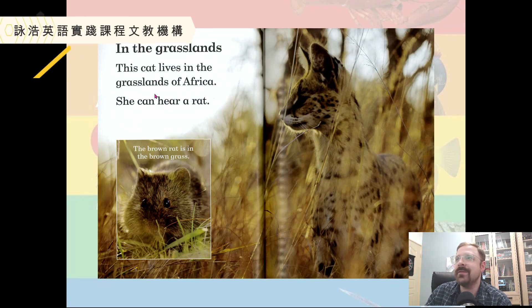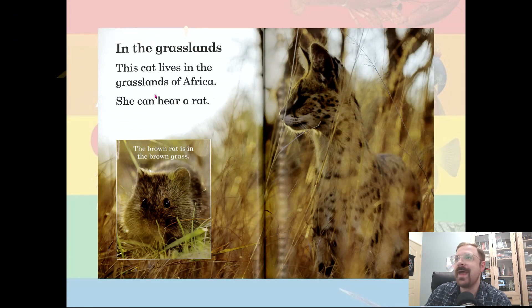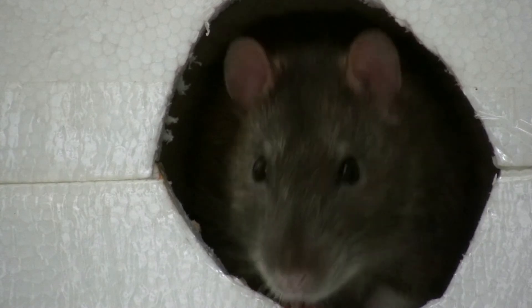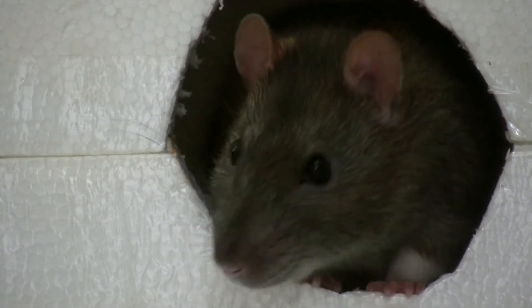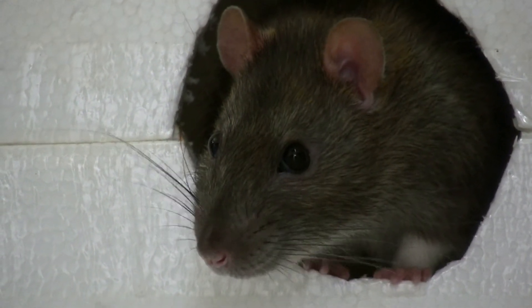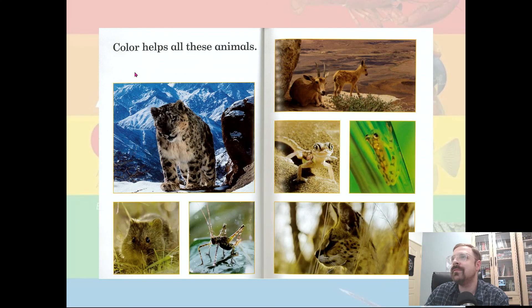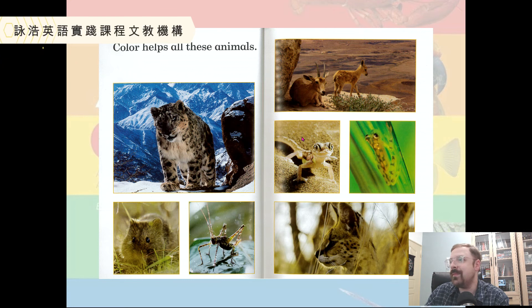In the grasslands, this cat lives in the grasslands of Africa. She can hear a rat. The brown rat is in the brown grass. Color helps all these animals.